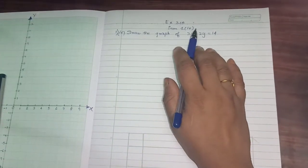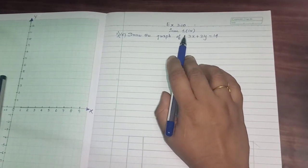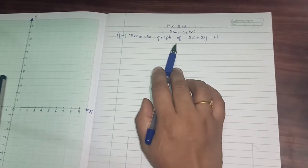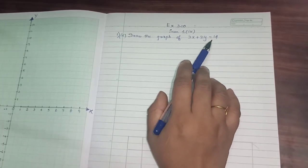So, exercise 3.10, sum 1, 4th subdivision, draw the graph of 3x plus 2y is equal to 14.